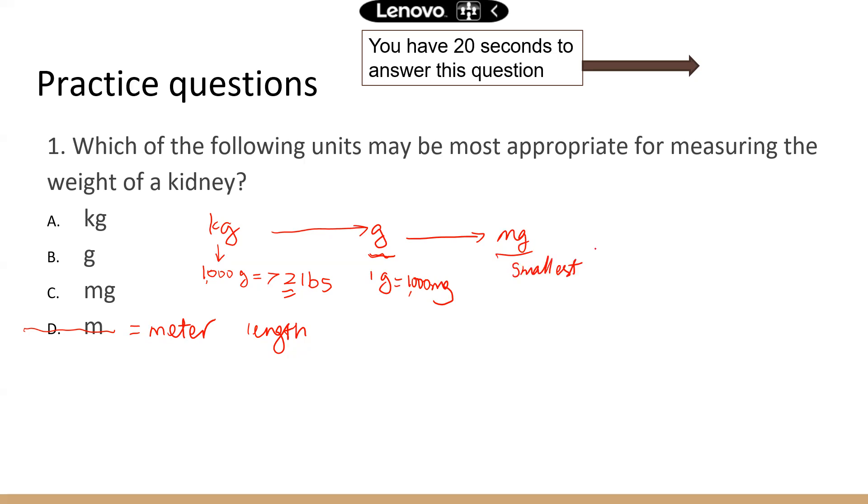Now, kidneys can vary in weight, right? But on average, it's about one-fifth to one-half of a pound. And something that I need to note is that one pound is 450 grams, roughly. Now, if you have a kidney that's one-fifth to one-half of a pound, which unit would you choose as the most appropriate for the weight of a kidney? Now, when it says most appropriate, that means you're not going to have too many zeros, okay? You're not going to say a kidney weighs 100,000 milligrams, right? That's just that the number is too big. It's really hard for the human brain to process.